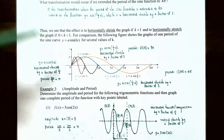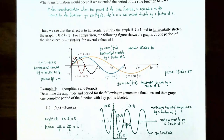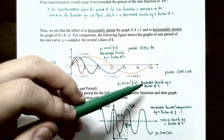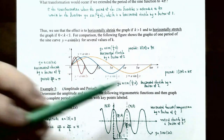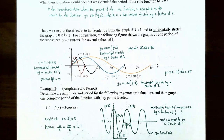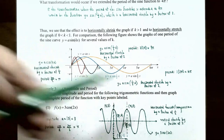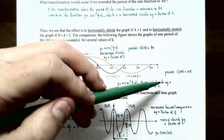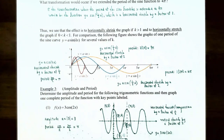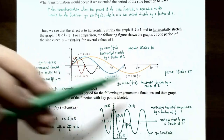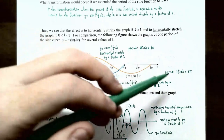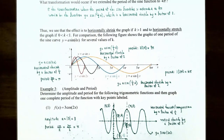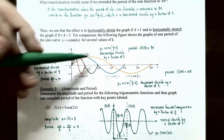For y = a·sin(⅓x), k = ⅓, so it's a horizontal stretch by a factor of 1 ÷ (⅓) = 3. The period is 2π ÷ (⅓) = 2π × 3 = 6π radians. So the graph in gold will start repeating values after 6π radians.